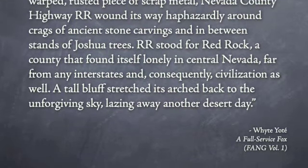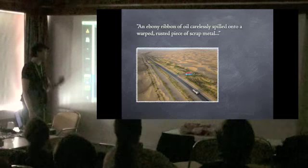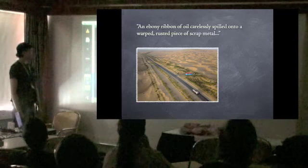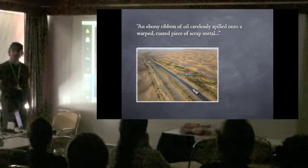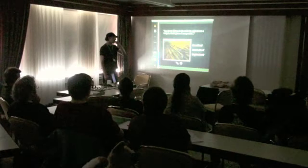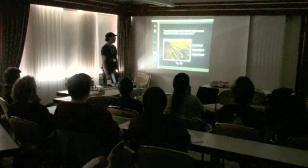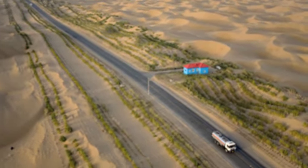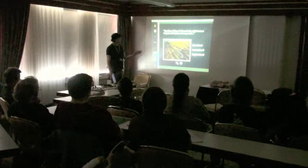You see the tricks that he's using here? The imagery is really powerful. An ebony ribbon of oil carelessly spilled on a warped, rusted piece of scrap metal. So what's he doing here? Is it sensation? Is it association? Is it an implication that he's employing to convey the emotions you experience when you hear that piece? Or is it all three? It's kind of all three. He's painting with mental pictures that you can immediately get. You realize, through inference, that he's not talking about an actual ribbon of oil on scrap metal. He's talking about a desolate landscape cut by this swath of asphalt wobbling through geographic features in order to make it to its destination. But it's a really powerful bit of imagery.